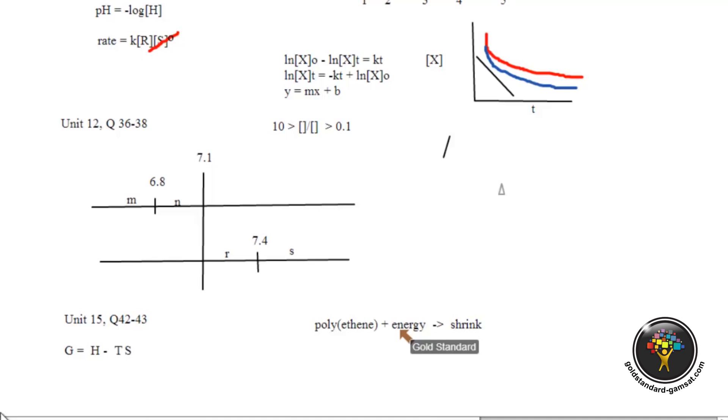So endothermic reaction, which we know this is, means that the H is positive. Without question, we know that the H delta is positive. So H in the equation is positive.